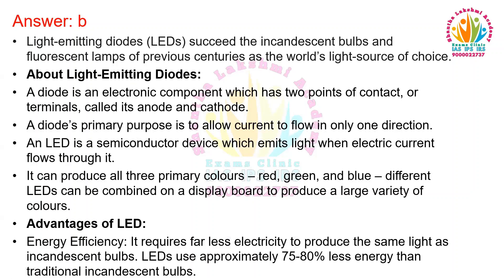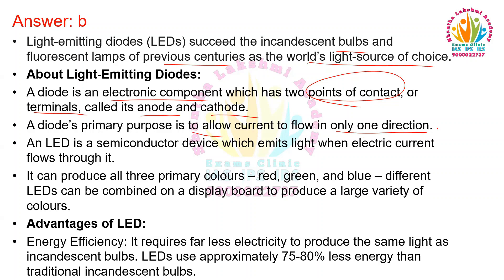Light emitting diodes succeeded incandescent bulbs and fluorescent lamps of previous centuries as the world's light source of choice. A diode is an electronic component which has two points of contact or terminals called an anode and cathode. The main purpose of the diode is to allow current to flow in only one direction. An LED is a semiconductor device which emits light when electric current flows through it. It can produce all 3 primary colors — red, green and blue — and different LEDs can be combined on a display board to produce a large variety of colors.